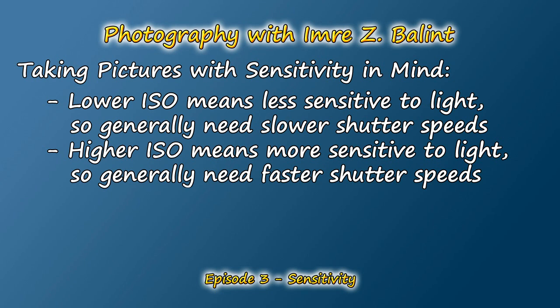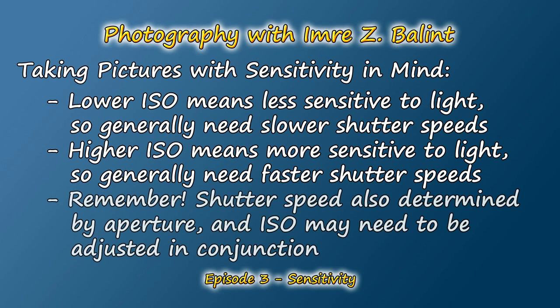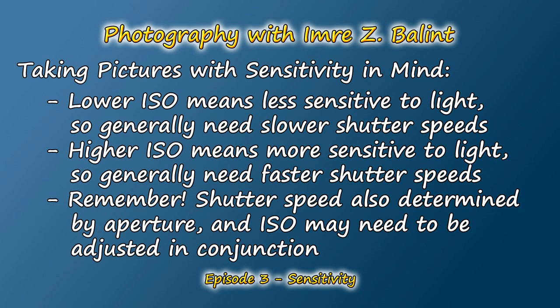Aperture also falls into the picture, as it controls the amount of light that enters your camera. If your aperture is closed — say you're at higher numbers like f/16 — then you may need to boost your ISO a bit, otherwise your shutter speed might be too slow to, for example, handhold your camera. Remember that aperture and ISO are usually set together, and I have a few more slides on that coming up.